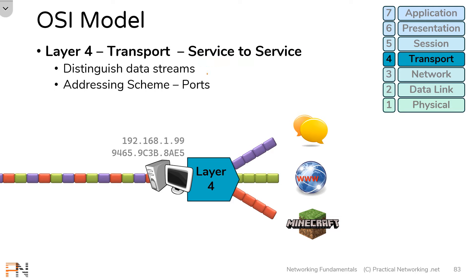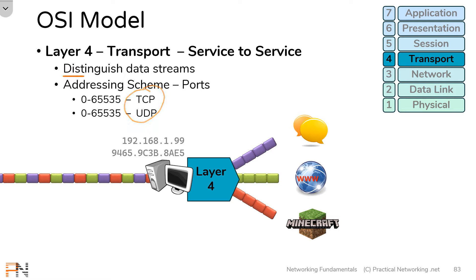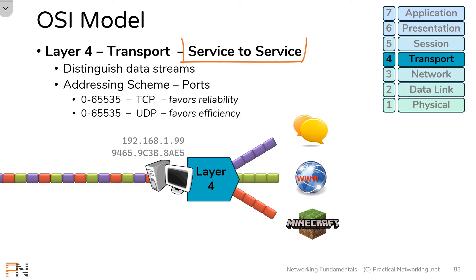Layer 4's addressing scheme involves ports. There are two sets of ports: 0 to 65,000 for TCP and 0 to 65,000 for UDP. TCP and UDP are two different strategies for distinguishing data streams — TCP favors reliability and UDP favors efficiency. Both TCP and UDP are simply different strategies for accomplishing the goal of Layer 4. Their inner workings are significant and fascinating, but unfortunately outside the scope of this lesson — they will both be covered in detail in a later lesson in this course.